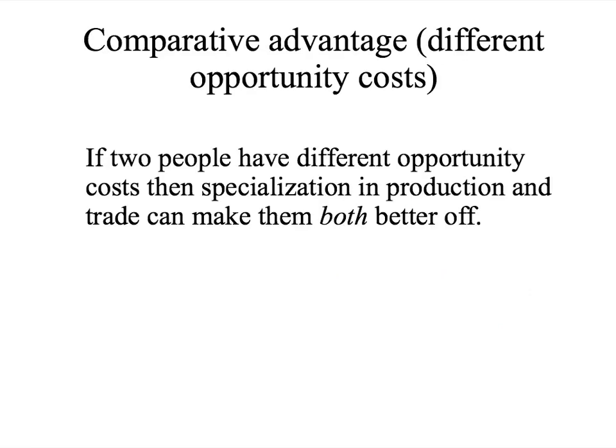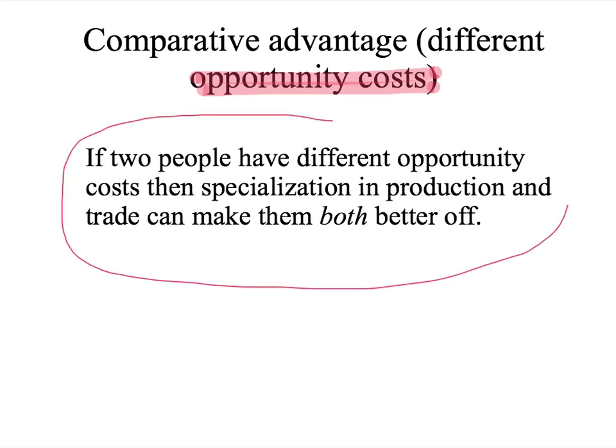The key to understanding comparative advantage is the concept of opportunity cost that we dealt with in earlier presentations. If you can't remember what an opportunity cost is, have a look at the earlier presentations to remind yourself. The key idea is that if two people have different opportunity costs, then specialisation and trade can make them both better off.